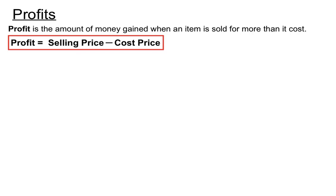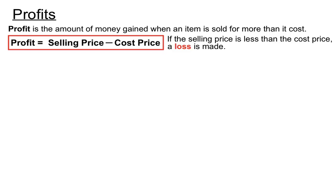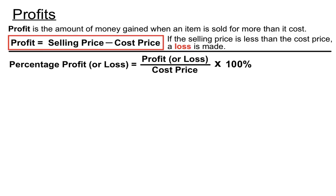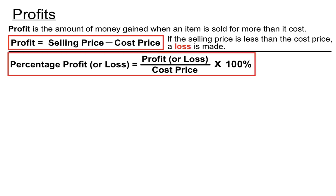The profit is the selling price minus your cost price — hopefully that's positive. If your selling price is less than the cost price, you've made a loss. For percentage profit or loss, you put the profit or loss amount over the original cost price, making a fraction, then turn it into a percent by multiplying by a hundred.